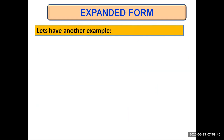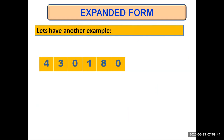In the yellow strip you can see the expanded form of the original number which is written in blue. Let's have another example of writing expanded form of a given number. We're given the number 430180. Keep this in mind: